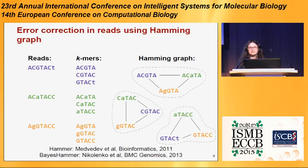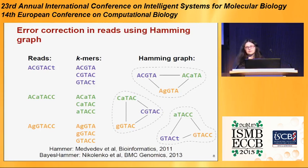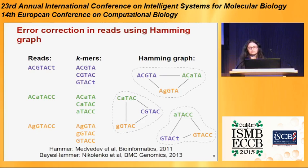Some tools, for example Hammer and BayesHammer, that correct sequencing reads use a Hamming graph. This approach extracts K-mers from reads — these K-mers are pretty short, for example 20 nucleotides. After that, it constructs a Hamming graph: we connect two K-mers by edges if the Hamming distance between them is small — for example, maximum allowed Hamming distance is 1. After that, ideally each connected component corresponds to a single correct genomic K-mer, and we can construct a consensus for each component and thus correct sequencing reads.